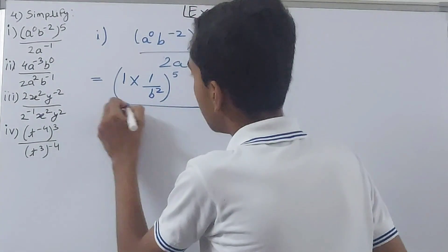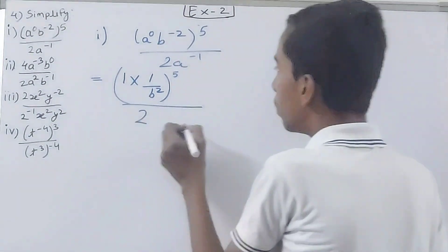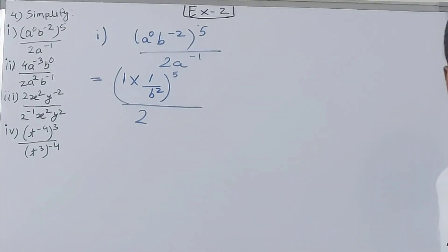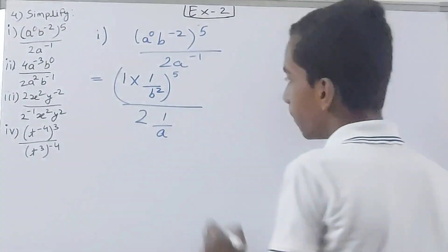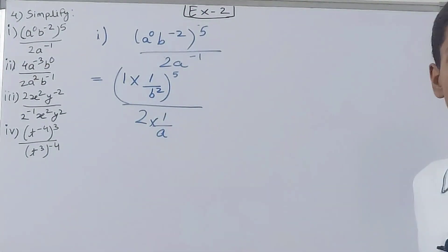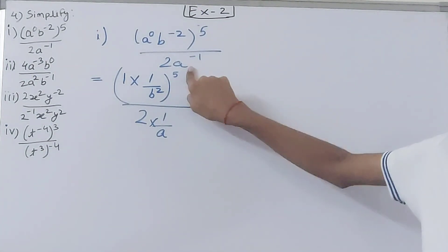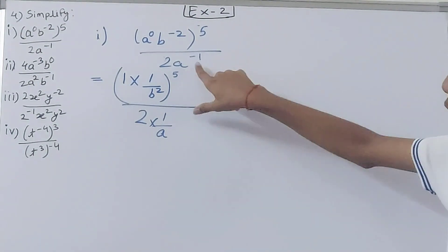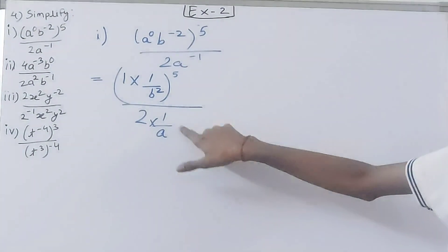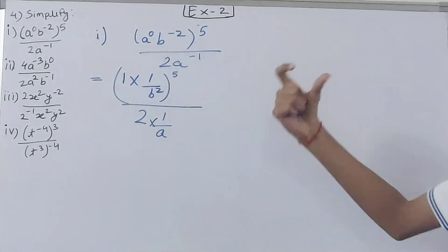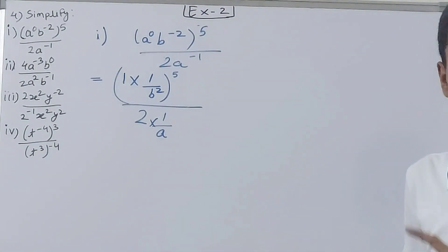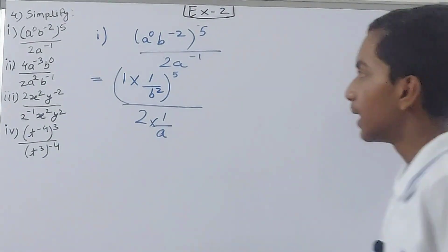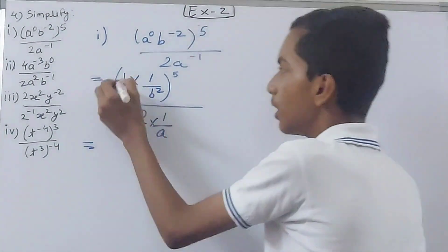Next, upon 2a to the power minus 1. Now 2a to the power minus 1 becomes 2 into 1 by a — why 1 by a? Because a has minus 1 as its exponent, so we reciprocate a to get 1 by a. We do not reciprocate the 2. Don't make the mistake of writing 1 by 2a — that would be wrong. We have to do 2 into 1 by a.